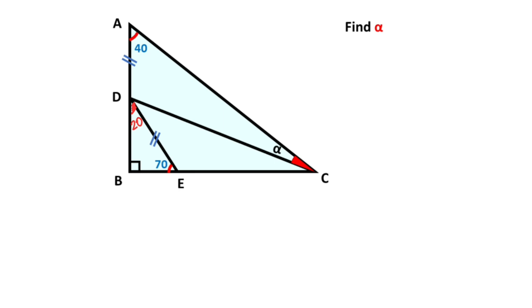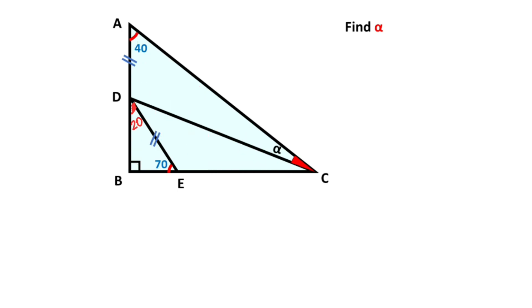After that, if you focus on triangle ABC, likewise 50 degrees remain here. Next step, angle DEC is 110 degrees.